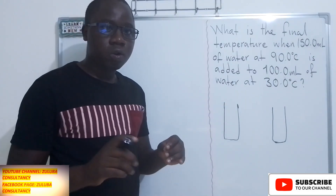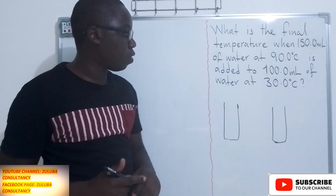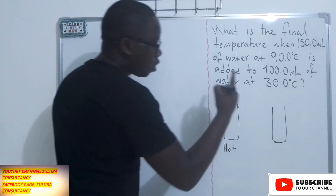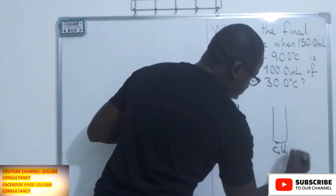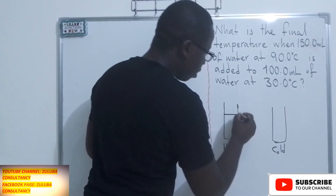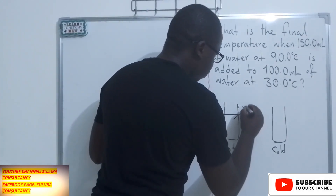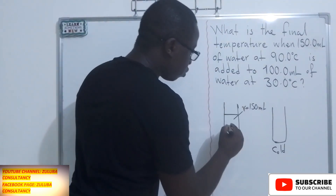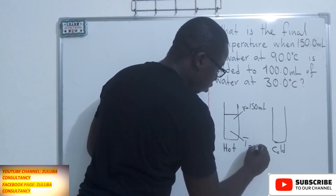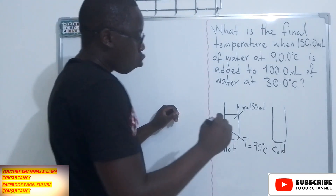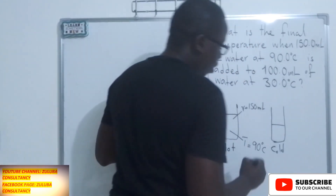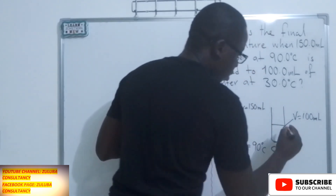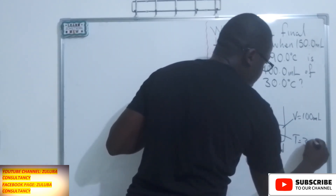To answer this question, we need to analyze the information we have been given. We have one water that is hot and another which is relatively cold. The hot water has a volume of 150 milliliters and a temperature of 90 degrees Celsius. The cold water has a volume of 100 milliliters and a temperature of 30 degrees Celsius.